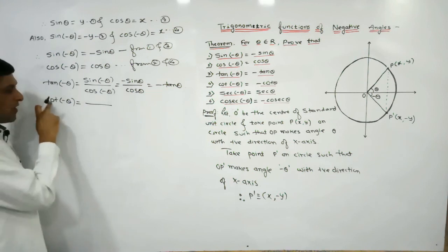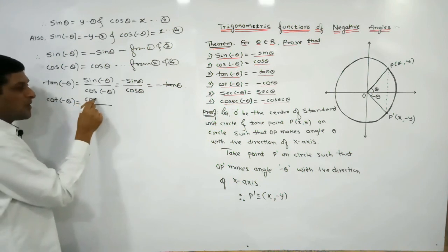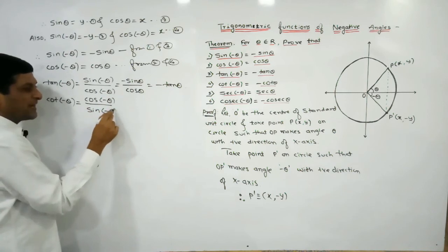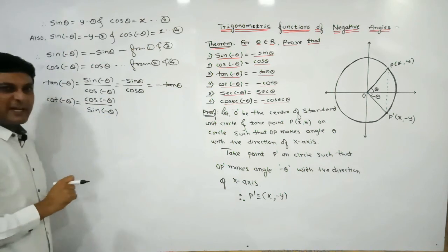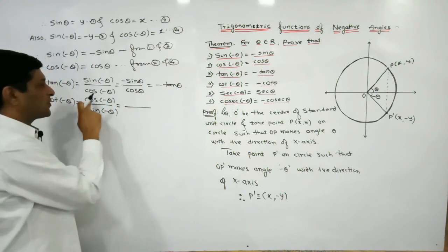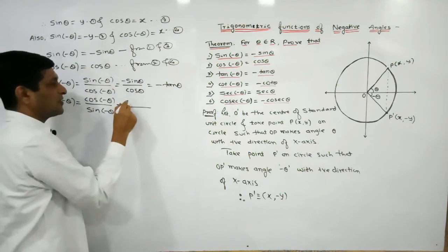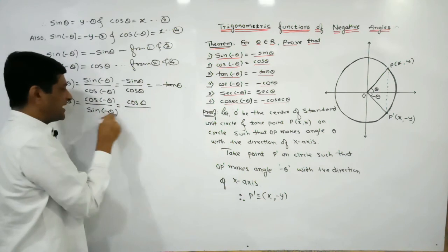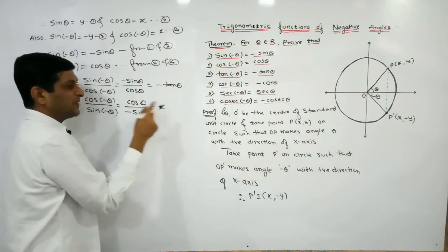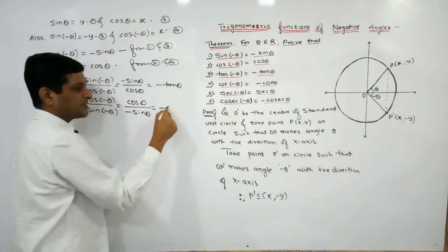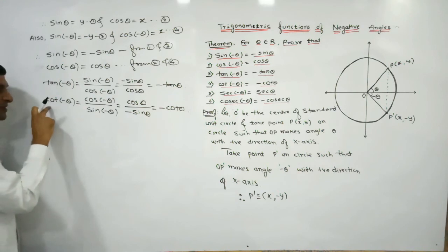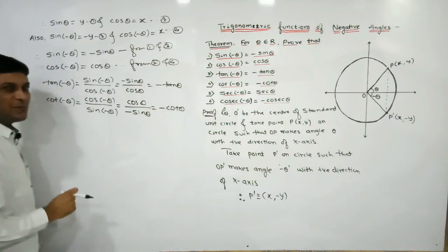For cot(-θ): cot can be written as cos upon sin, so cot(-θ) = cos(-θ) / sin(-θ) = cos θ / (-sin θ) = -cot θ.